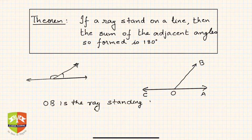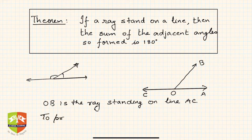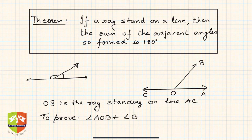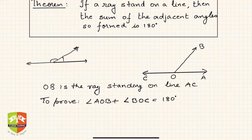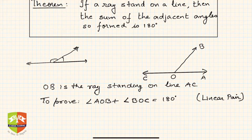OB is the ray standing on line AC. We need to prove that angle AOB plus angle BOC is equal to 180 degrees. This is what is also called in short a linear pair. So how do we prove this? We have to deal with 180 degrees, and we have knowledge of a type of angle called the right angle.